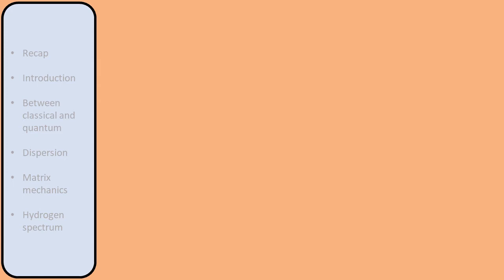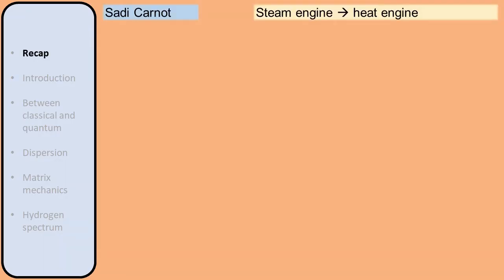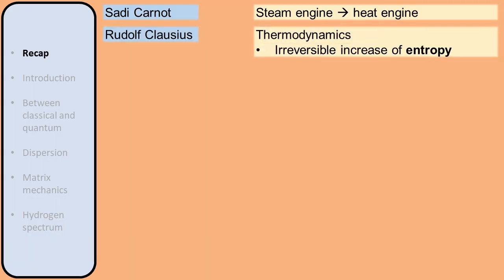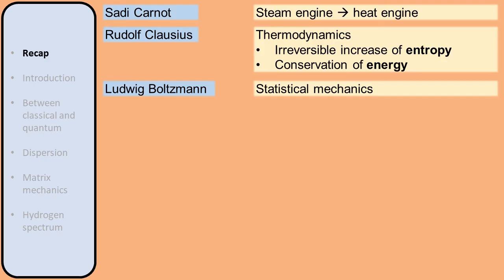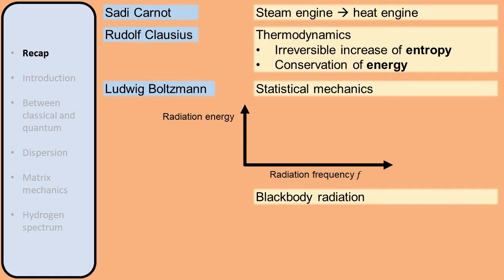In the previous videos, we saw how the development of quantum mechanics began. At the very start, Sadi Carnot's study of the steam engine inspired the field of thermodynamics. Rudolf Clausius introduced the concept of entropy to quantitatively describe the reversibility of processes, and the law of energy conservation was introduced to understand the conversion of heat energy to mechanical energy. Ludwig Boltzmann explained these phenomena at the microscopic level with statistical mechanics. Understanding the relation between temperature and heat led to the concept of blackbody radiation — an object at a certain fixed temperature that emits and absorbs all frequencies will emit radiation with a spectrum whose shape depends on temperature. The precise formula for this radiation spectrum was considered a very important fundamental question of thermodynamics.